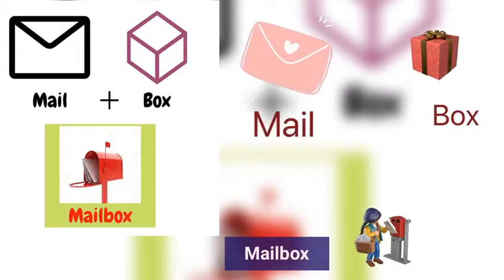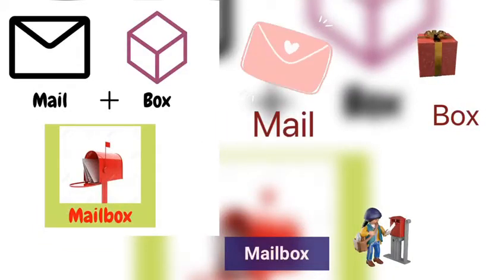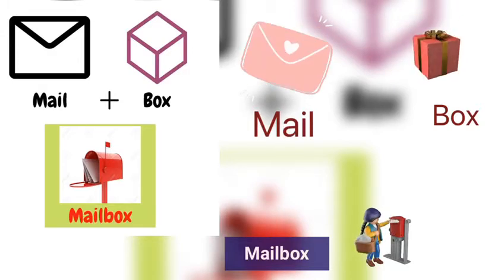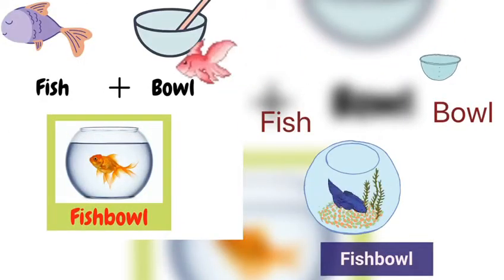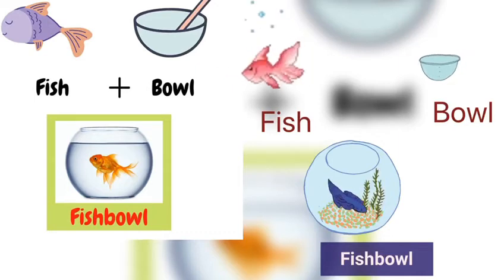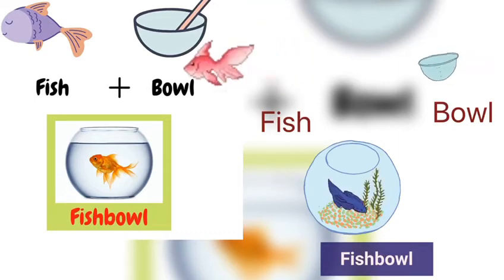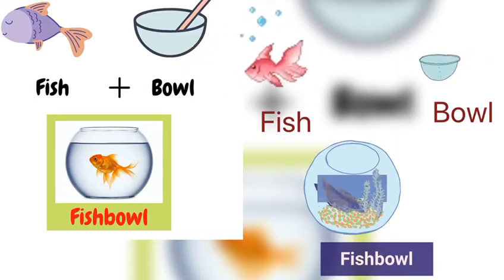'Mail' is one object, 'box' is the second object — you connect them into 'mailbox'. 'Fish' is one object, 'bowl' is the second object — you connect them into 'fishbowl'.